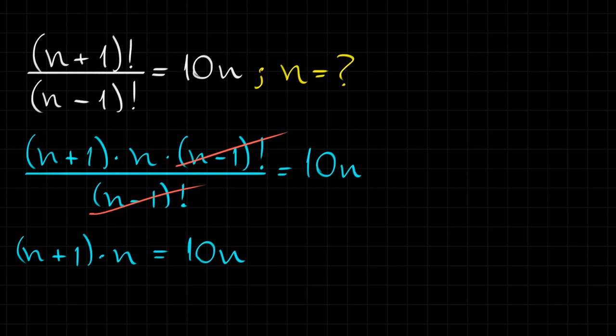Now, I can simplify this n. If I divide both sides of the equation by n, I simplify this n and this one, right? And, in the end, we have (n+1) is equal to 10.